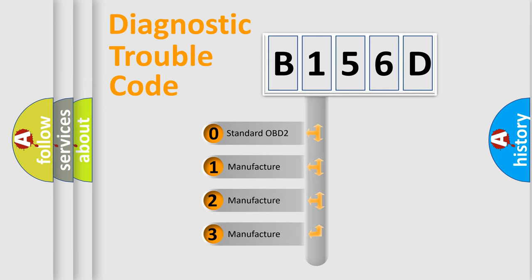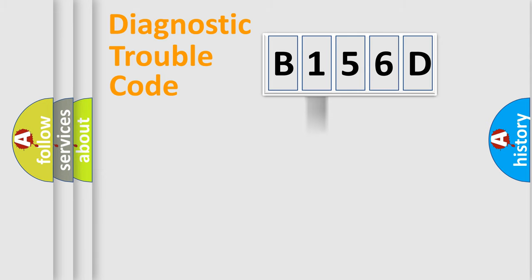If the second character is expressed as zero, it is a standardized error. In the case of numbers 1, 2, 3, it is a car-specific error.